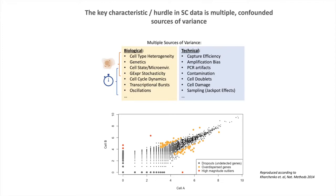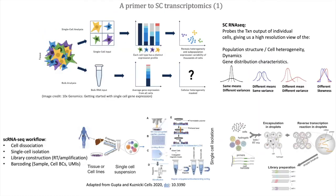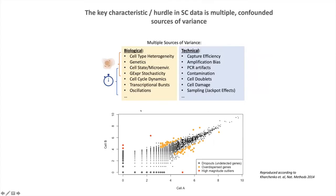But at the same time, you have different technical sources of variance, which can come from different capture efficiency of your experiment, different amplification biases, PCR artifacts, contaminations, cell doublets, damaged cells, sampling effects, and so on. All together, these effects give rise to a typical profile that you see here. So if you look at two cells of a typical single-cell RNA sequencing experiment, even if those two cells are of the same type, you usually get a picture that is of a completely different type compared to bulk RNA sequencing data.